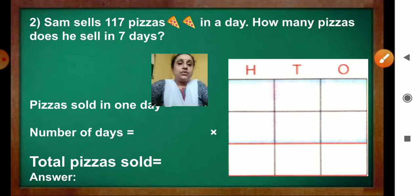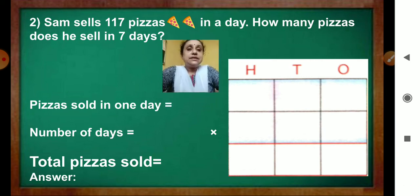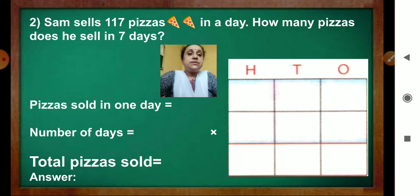Now, question 2. Sam sells 117 pizzas in a day. How many pizzas does he sell in 7 days? Now, you will write pizzas sold in 1 day. Then write number of days. After multiplying the numbers, you will get the product. You will get the answer. Total pizzas sold.